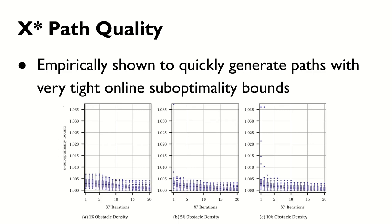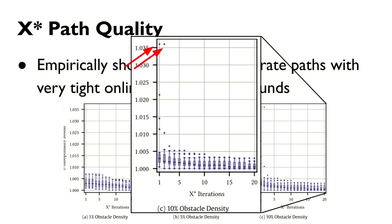These are the online suboptimality estimates of the first 20 iterations of WAMPF run on four grids, 30 agents with varied obstacle densities. X* almost always generates very tight suboptimality bounds, and in the case where these are somewhat loose, such as in a few scenarios from the first iteration of this 10% density scenario, which have above 3% suboptimality bound, less than five iterations is sufficient to bring these bounds within half a percent of suboptimal.